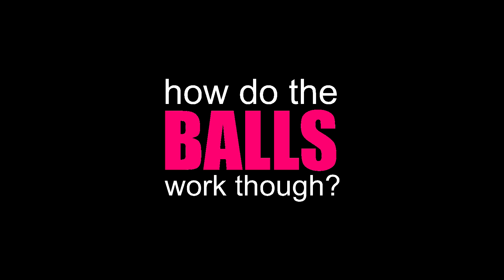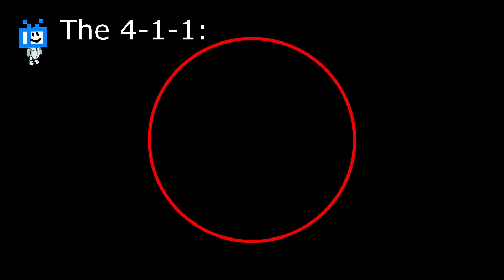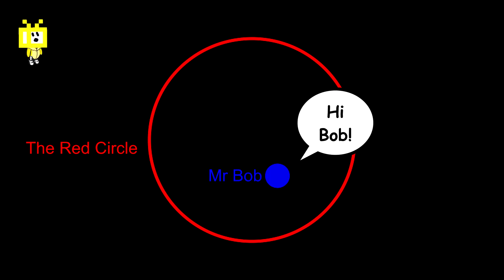But how do these work though? Well, here's the 411 folks. There's a big outer circle and a bunch of balls that bounce around inside it. Simple enough. Let's start with a circle and let's start with just one ball, Mr. Bob. Say hi Bob. Hi Bob.